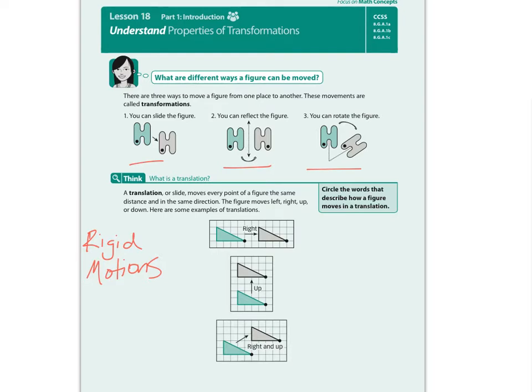But here's what we've got. We also call these transformations, they're also known as rigid motions. So those are rigid motions, transformations. Those are synonyms for each other. But you see our three main rigid motions or transformations right here: translations, reflections, and rotations.